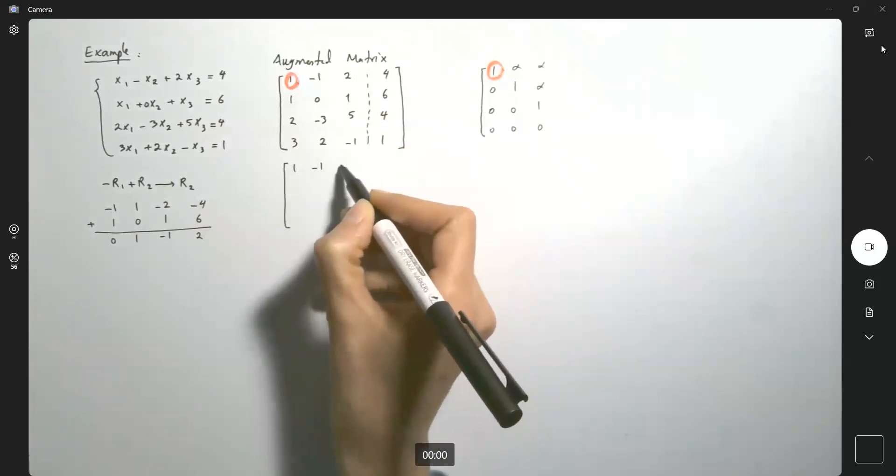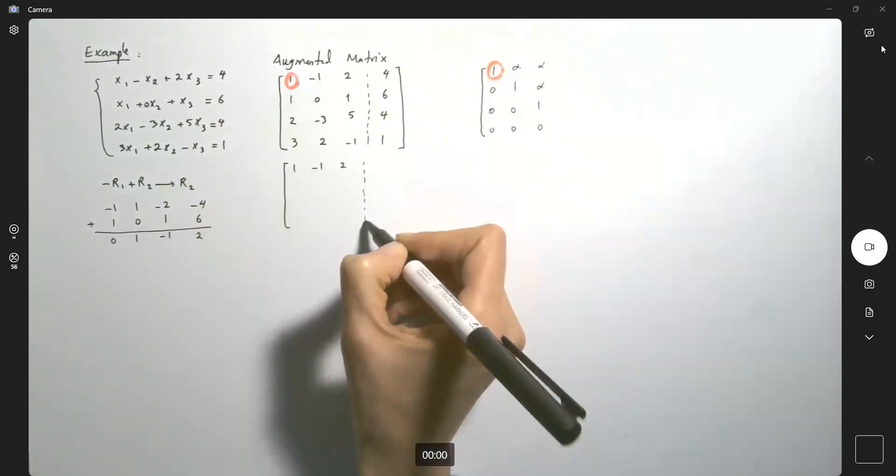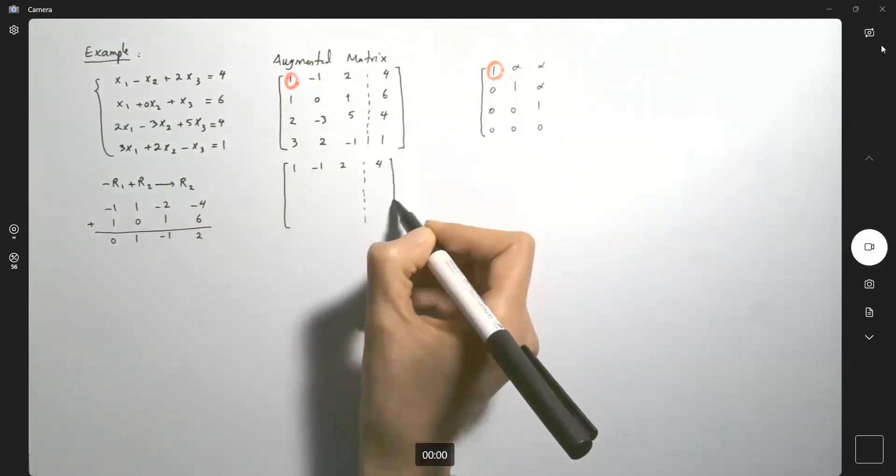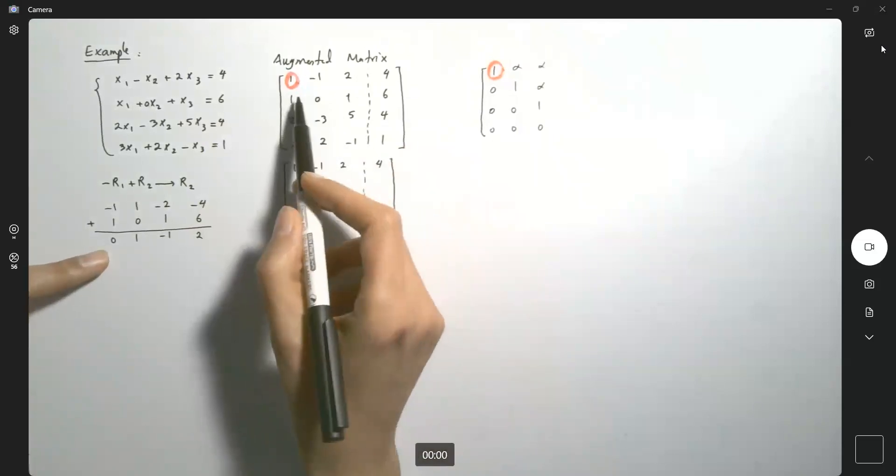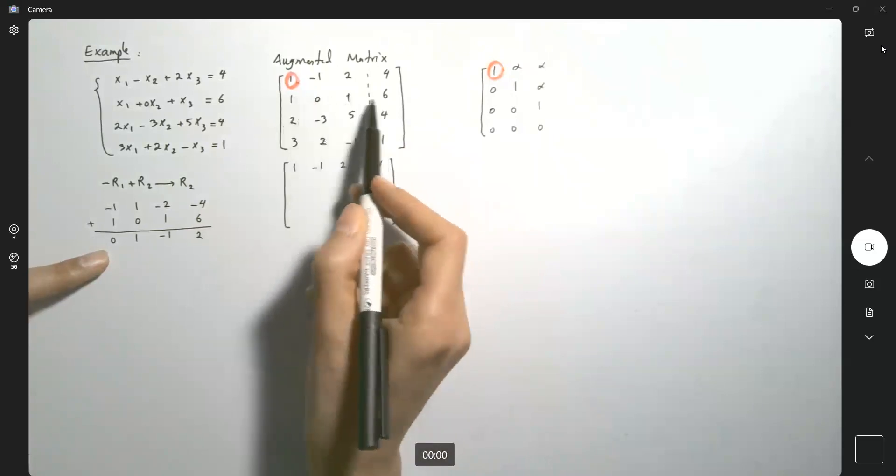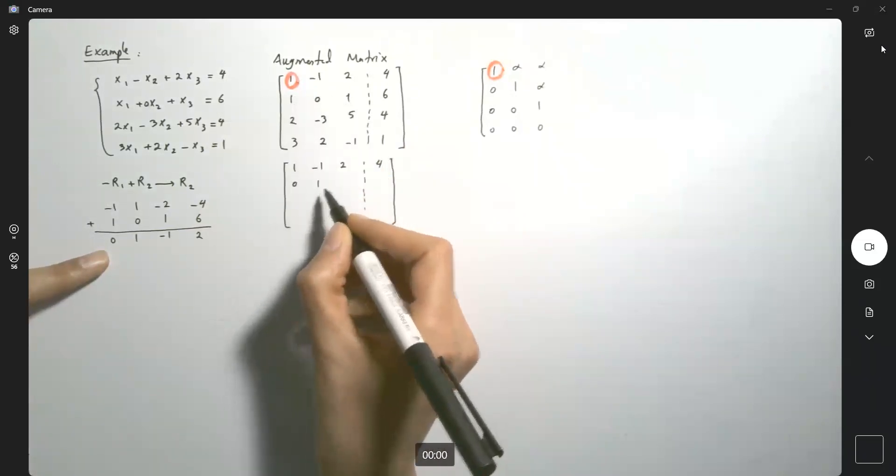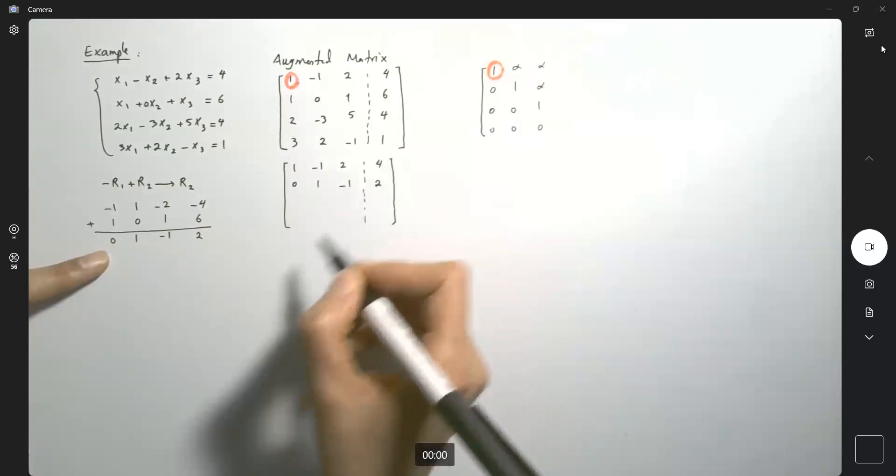I have one, I have a negative one, two. There's no change to the first row. We're going to keep first row as it is. But now this new row will be replaced for the second row down here. So zero, one, negative one, and two.